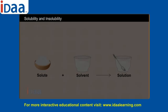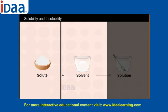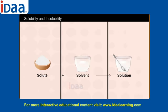Solubility and insolubility. Solubility is the ability of a substance to dissolve. In the process of dissolving, the substance which is being dissolved is called a solute, and the substance in which the solute is dissolved is called a solvent. A mixture of solute and solvent is called a solution.